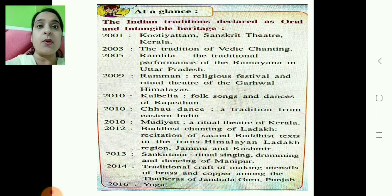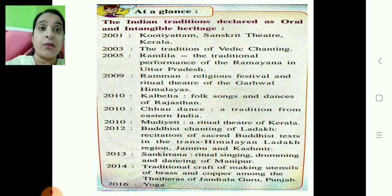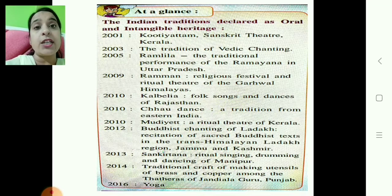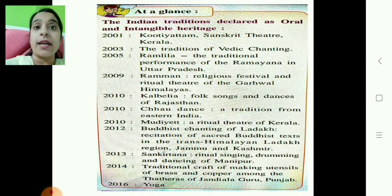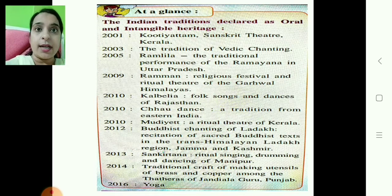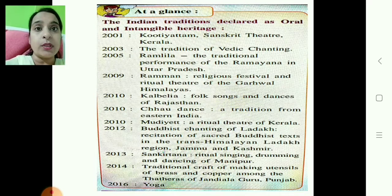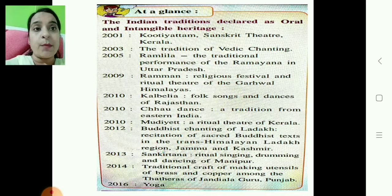In your textbook there are some box questions which are very important from an objective point of view. The Indian traditions declared as oral and intangible heritage — you have to be very careful because you get such questions in objective type, like 'match the following' or 'identify the wrong pair.' In 2001, Kutiyattam — that is Sanskrit theater of Kerala — was declared. In 2003, the tradition of Vedic chanting. In 2005, Ramlila — the traditional performance of the Ramayana in Uttar Pradesh.